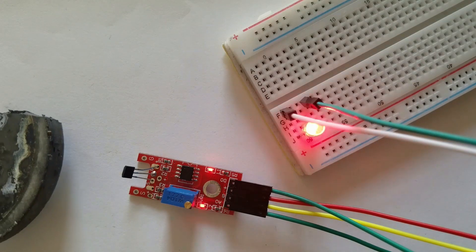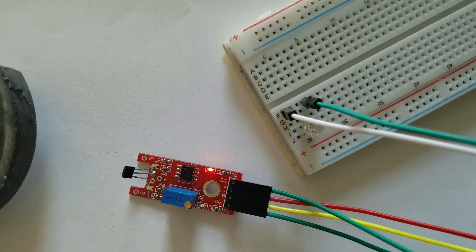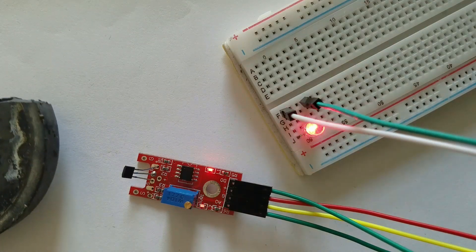When a magnetic field is detected by the sensor, the LED L2 will light up.